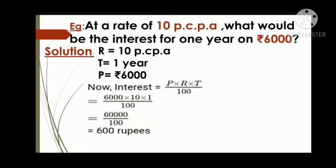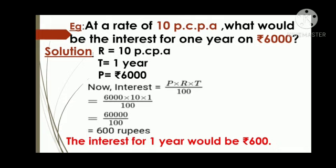Now we will write the formula: P into R into T upon 100. Substituting the values — principal is 6,000, rate of interest is 10% per annum, and time is 1 year — upon 100. So 6,000 multiplied by 10 gives us 60,000 upon 100. After reduction of zeros from numerator and denominator, we are left with 600. Therefore, the interest for one year would be rupees 600.